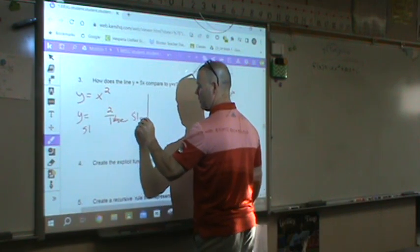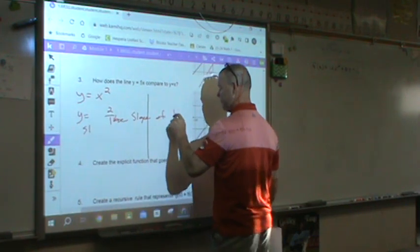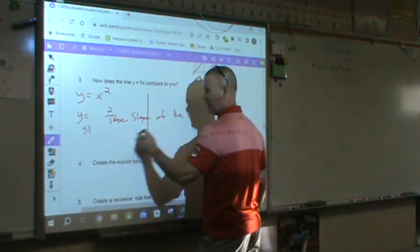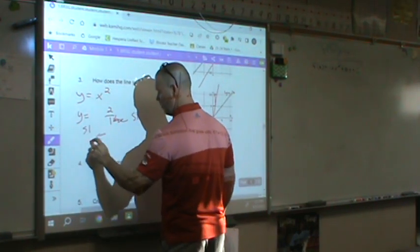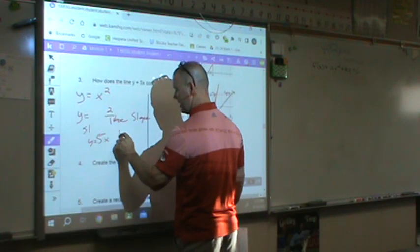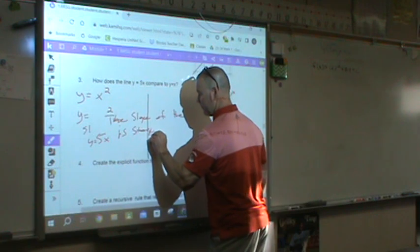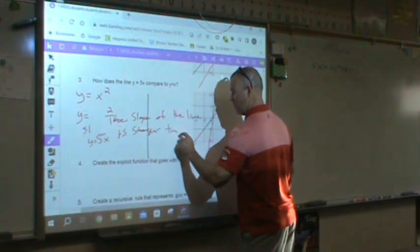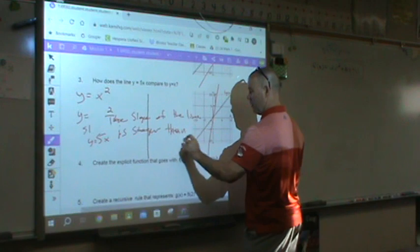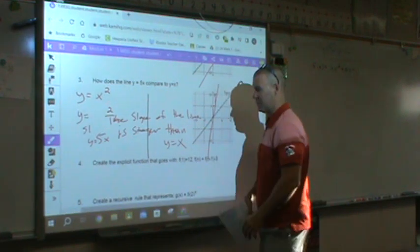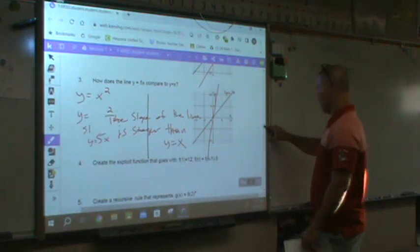The slope, and I've got to hurry the bell rings. The slope of the line, y equals 5x, is steeper than y equals x. That's all that's changed is the slope is steeper.